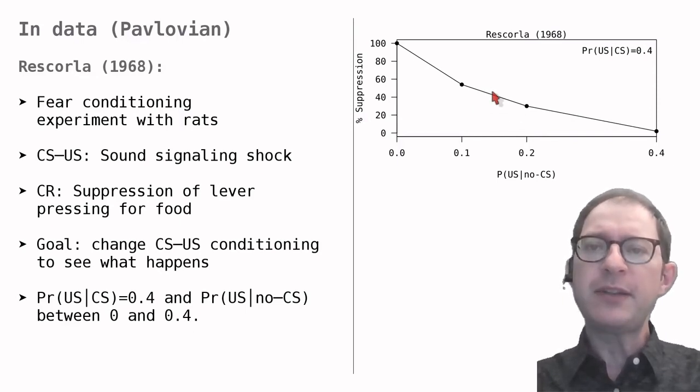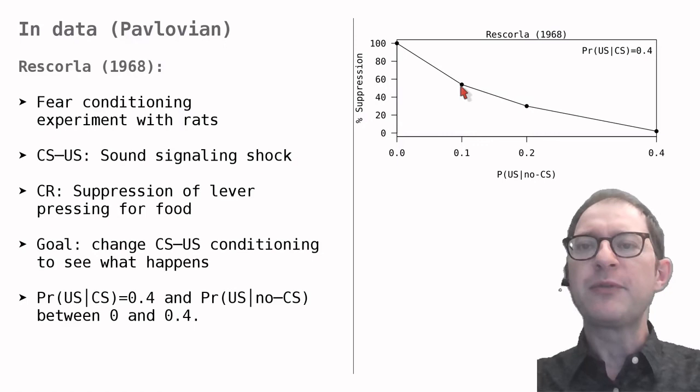The next two points are still from positive contingencies, but smaller ones, because the US sometimes occurred without the CS. In one case there was a 10% probability, and in the other case a 20% probability. In these cases, the rats became afraid of the CS, but less than before, as evidenced by the fact that the CS could not completely suppress lever pressing. We had about 50% suppression, and here about 20 or 30% suppression.